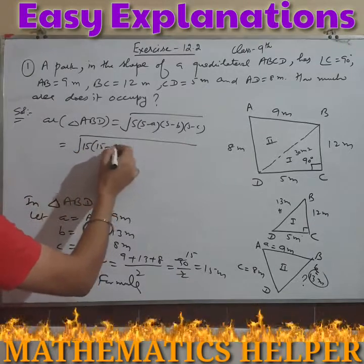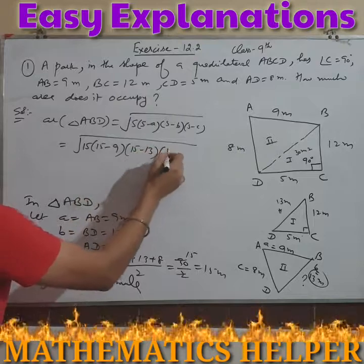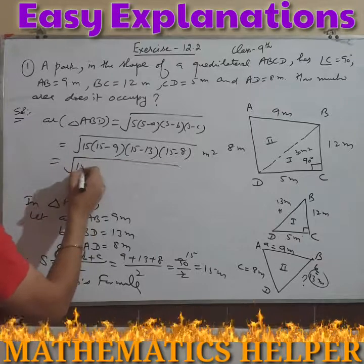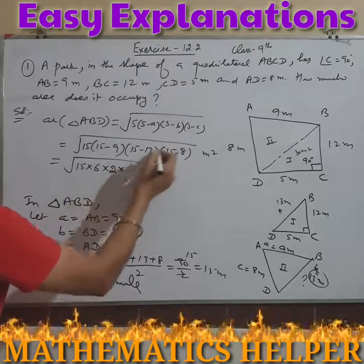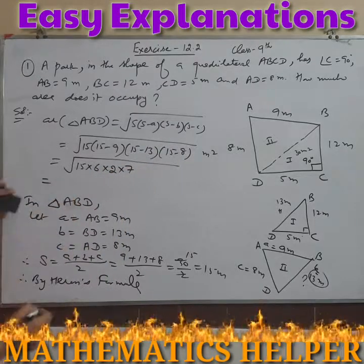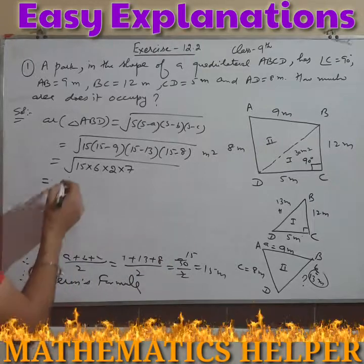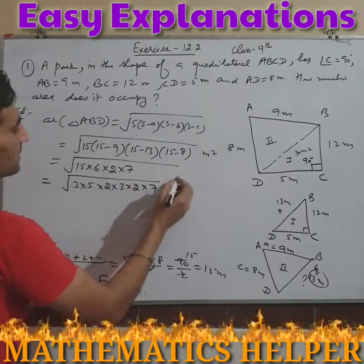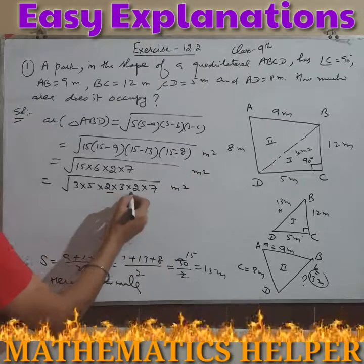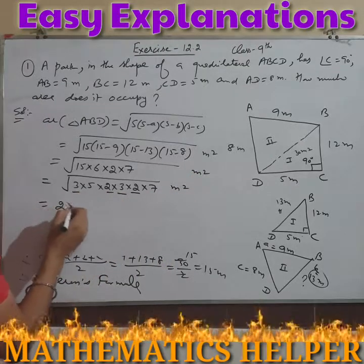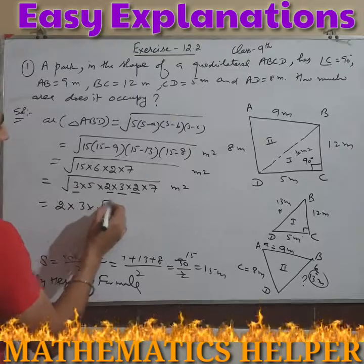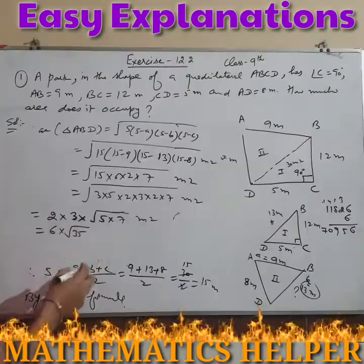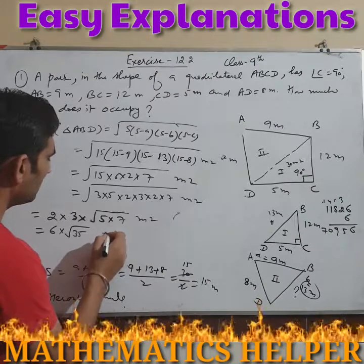Calculating: √[15 × 6 × 2 × 7] = √[15 × 6 × 2 × 7]. Breaking down: 15 = 3 × 5, 6 = 2 × 3, so we have 2² and 3² which come out of the root. This gives 2 × 3 × √(5 × 7) = 6√35 m².